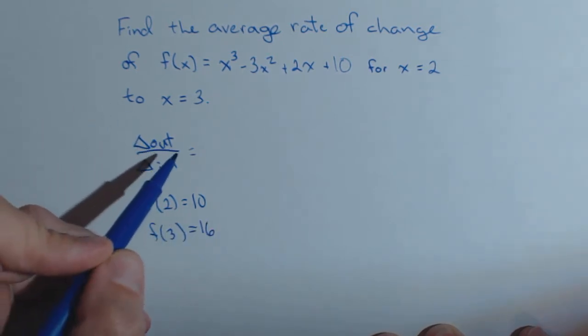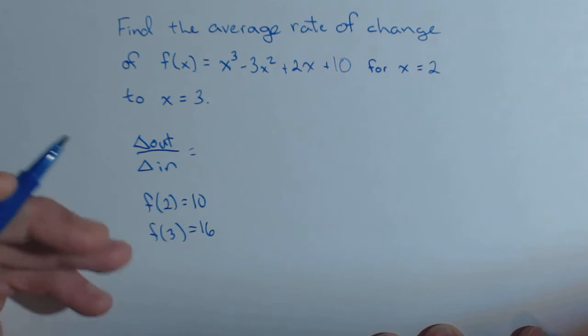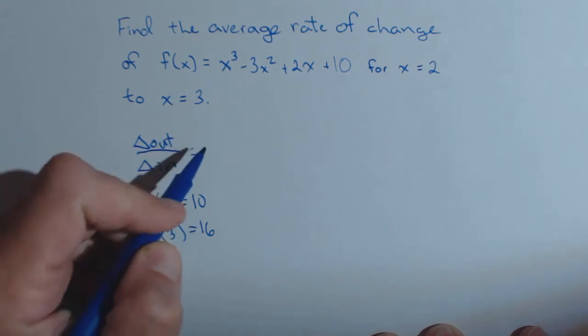So now it's basically doing slope, change in output over change in input, y₂ - y₁ over x₂ - x₁.